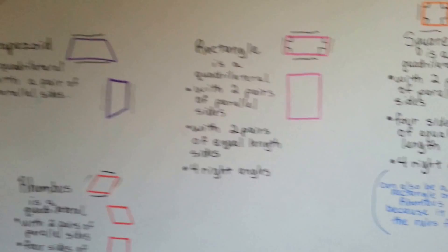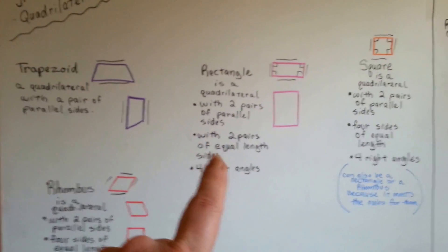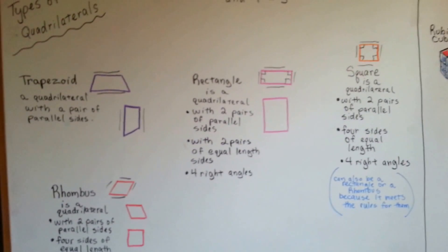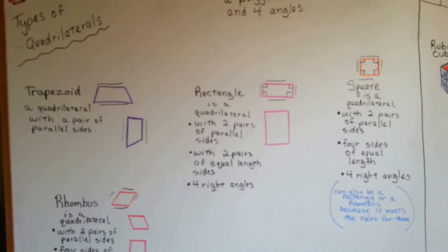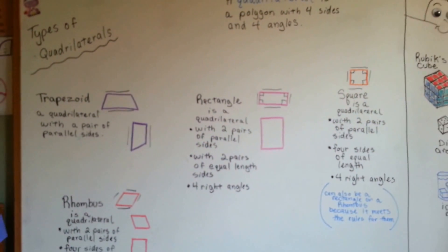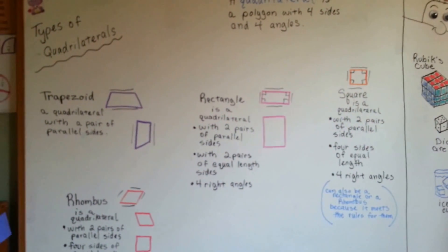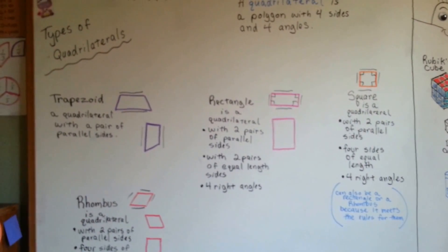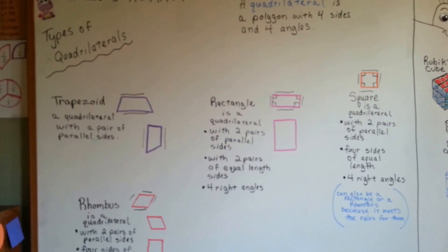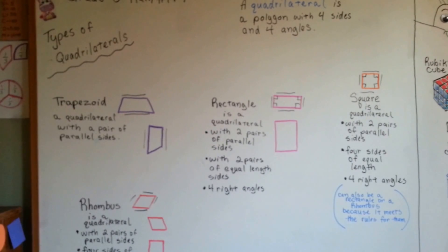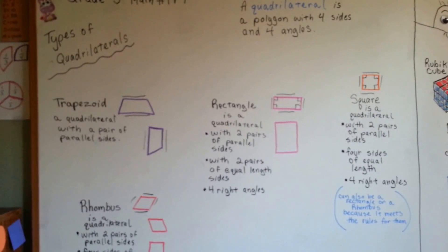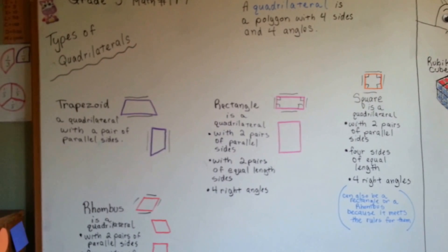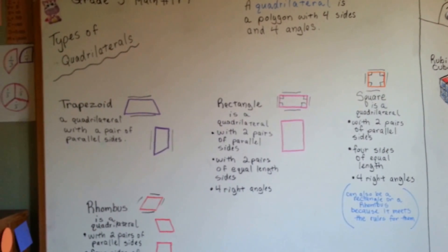So we've got trapezoid, rectangle, square, and rhombus — four new shapes for you to know. They're all quadrilaterals, all polygons with four sides and four angles. We're going to continue talking about geometry and shapes, and we're going to talk about triangles next. Stick with me — I'll see you there.